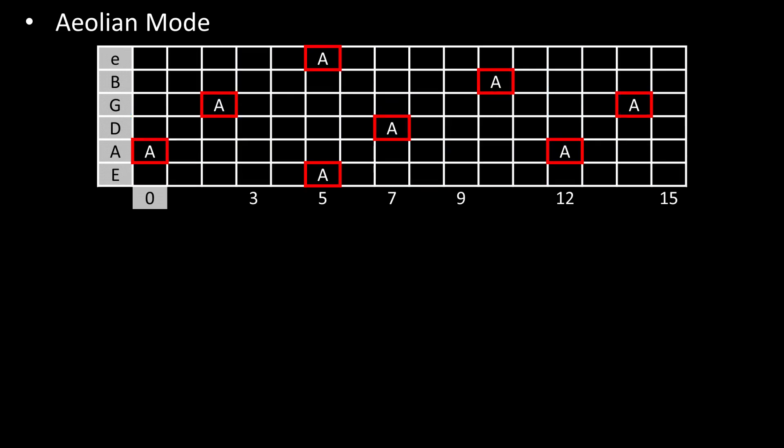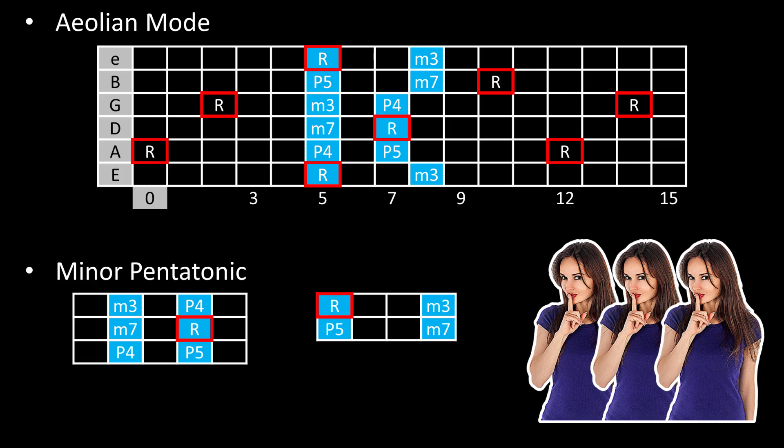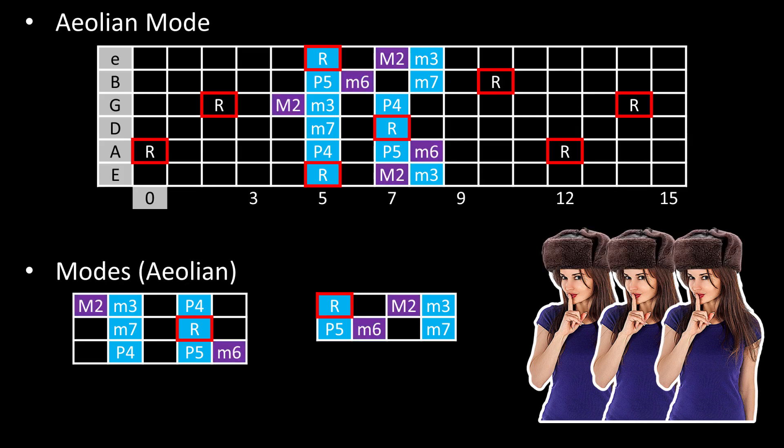Instead, you'll have memorized all of the root notes. Based on the root notes that are in your hand position, you'll visualize the pentatonic shape constructed by hanging the boxes on those root notes. Then, you'll accessorize to visualize the mode that you desire.